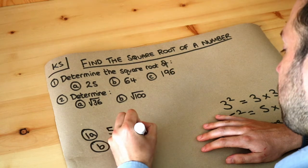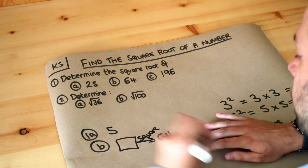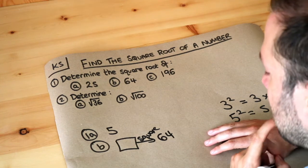what number, when you square it, gives you 64? What number times itself gives you 64?